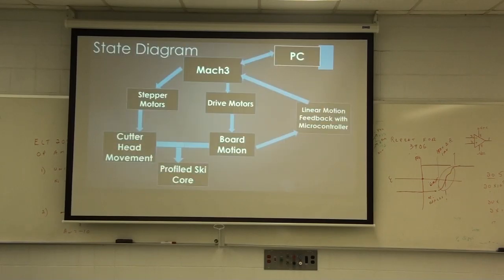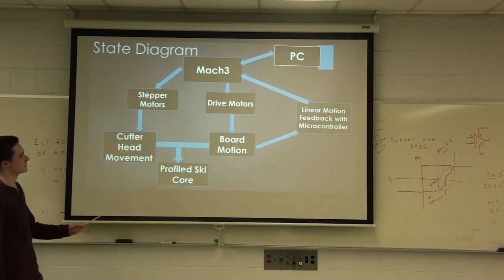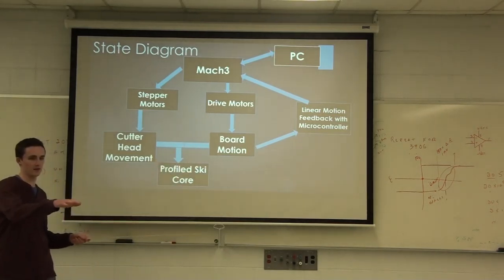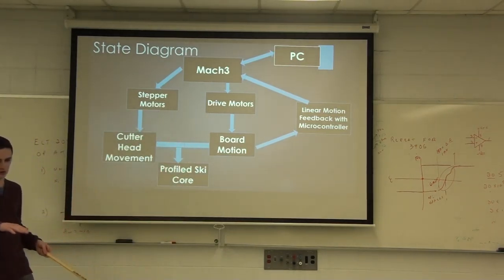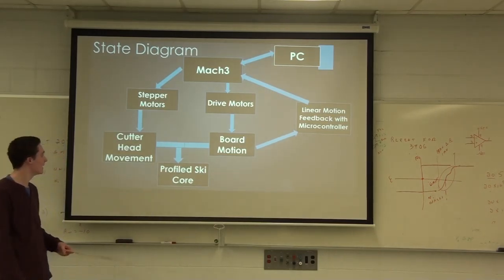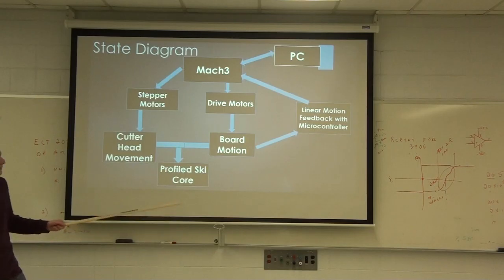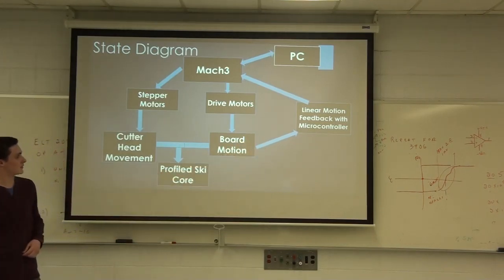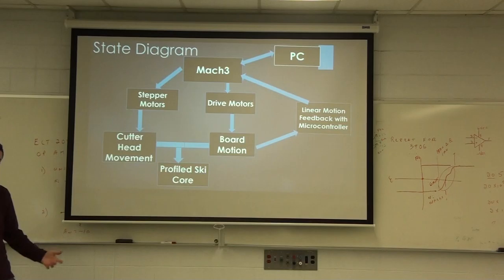Here's a little stick diagram. The PC is going to be our user interface, and Mach3 is our main controller. It's the software that we're going to be using. From there, Mach3 controls the drive motors that move the board back and forth, and a stepper motor which controls the z-axis, as we're calling it, or the height of the cutting head. Then there's a little bit of feedback loop so that Mach3 knows where the board is, and hopefully the final product is a profiled ski board.